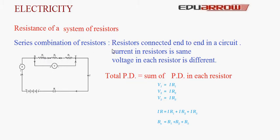The voltage in each resistor is different in a series combination. The total potential difference is equal to the sum of the potential differences across each resistor. That is, if V is the total potential difference and V1, V2, and V3 are the potential differences in the respective resistors, then V is equal to V1 plus V2 plus V3.